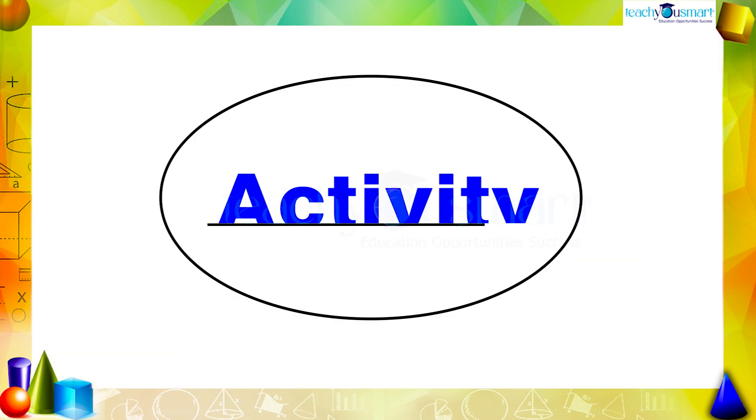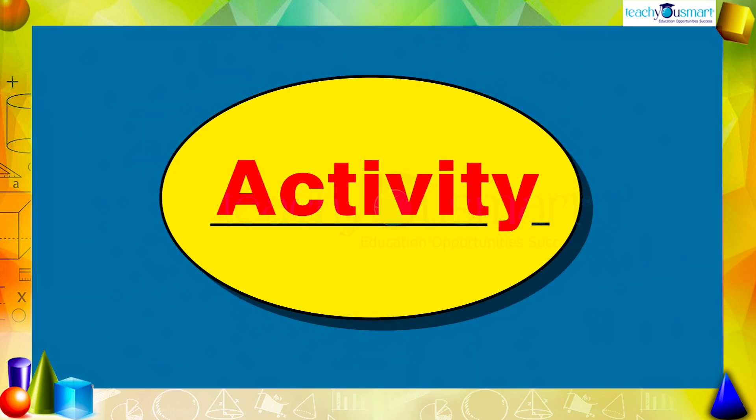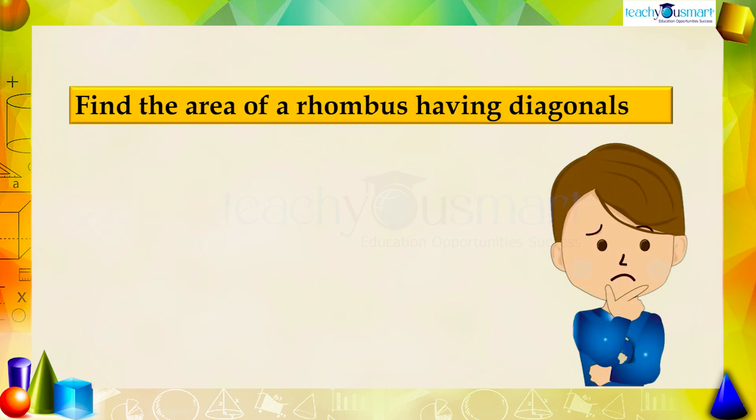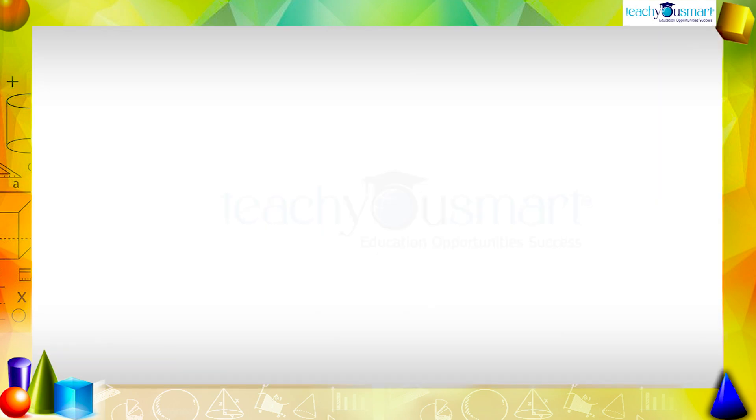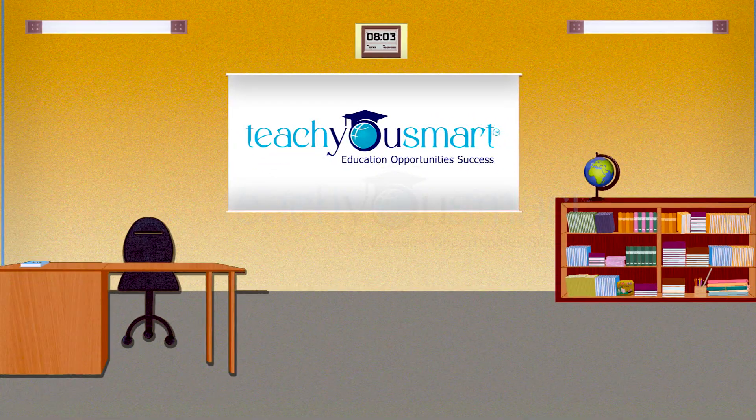Before winding up, let's check how much you understood by doing an activity. Find the area of a rhombus having diagonals 10 cm and 6 cm. That's all for now. See you in the next class.